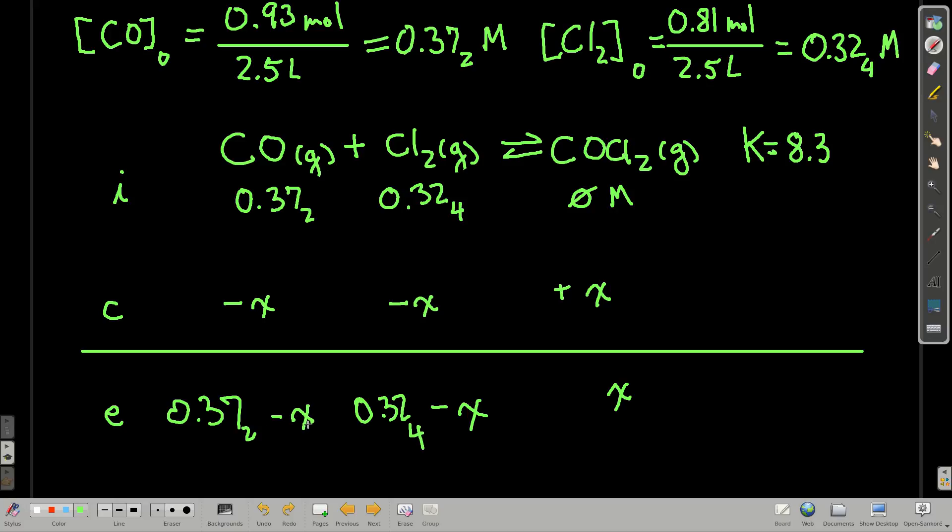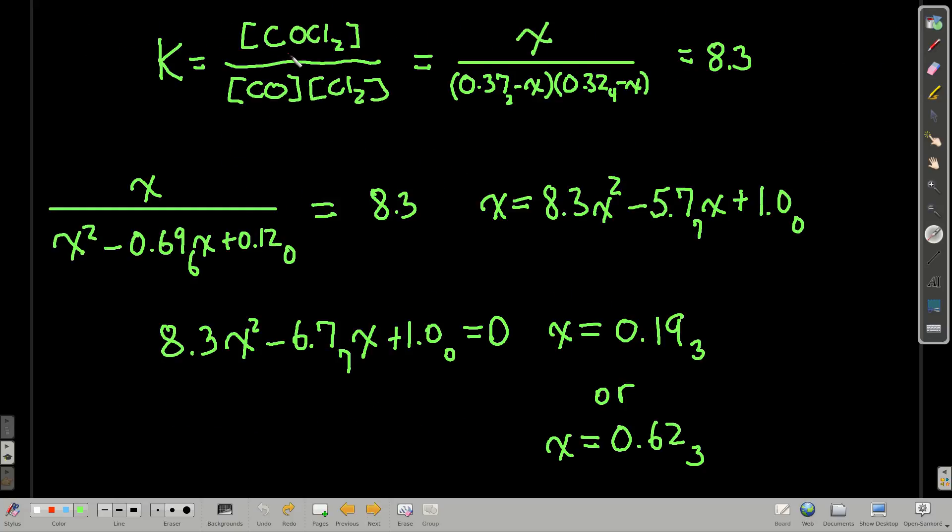Now that we know the equilibrium concentrations, at least in terms of X, and we know K, we can plug into the equilibrium constant expression and solve for X, just like this. So that's the equilibrium constant expression. Plugging in the concentrations in terms of X that we figured out from our ICE table, it looks like this.